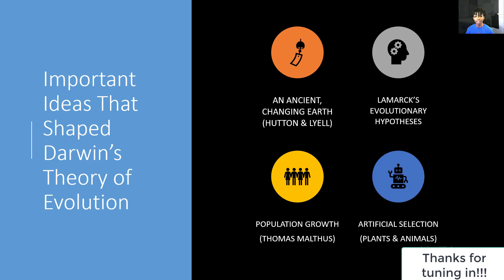Let's talk about the important ideas that shape Darwin's theory of evolution. First, we have an ancient changing earth made by Hutton and Lyell. Second, we have Lamarck's Evolutionary Hypothesis. Third, we have Population Growth made by Thomas Malthus. And then fourth, we have artificial selection, which includes plants and animals.